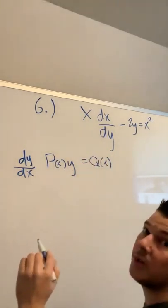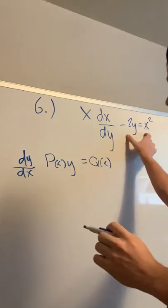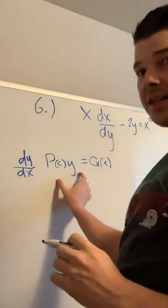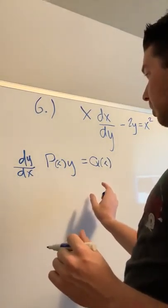So what we want to do is turn our equation into something that looks like this, that way we can solve for missing parts.